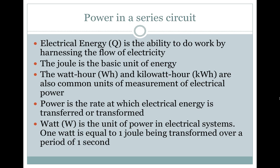Electrical energy is the ability to do work by harnessing the flow of electricity. The joule is the basic unit of energy. The watt-hour and kilowatt-hour are also common units of measurement of electrical power. Power is the rate at which electrical energy is transferred or transformed. The watt is the unit of power in electrical systems. One watt is equal to one joule being transformed over a period of one second.